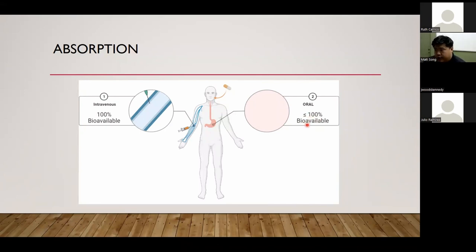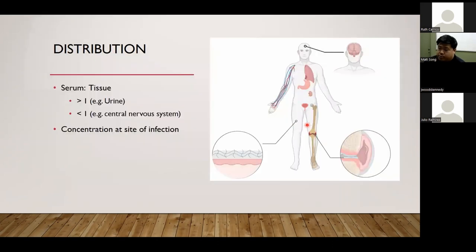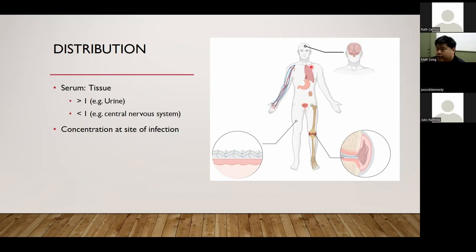After the drug makes its way into the bloodstream — either through intravenous administration or oral absorption from the gut — we want to know where it goes in the body, which is called drug distribution. A drug can potentially go anywhere, depending on the drug, including the central nervous system, pulmonary tissues, gastrointestinal tissues, urinary tract, bone, joints, other connective tissues, and the dermis or epidermis.